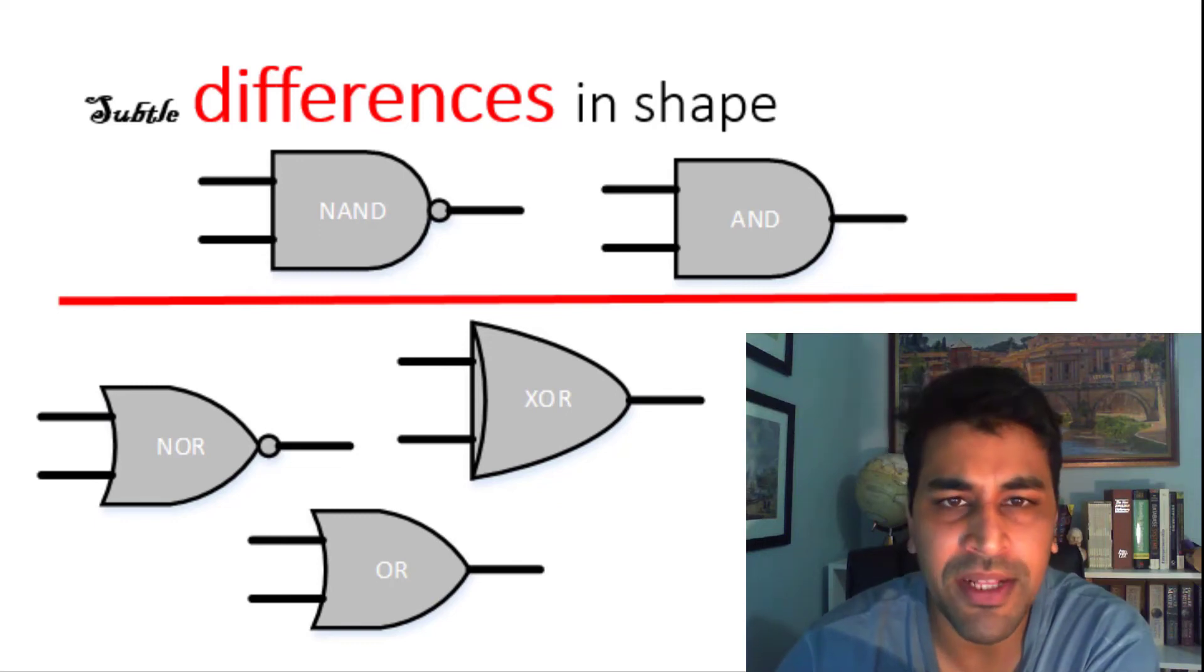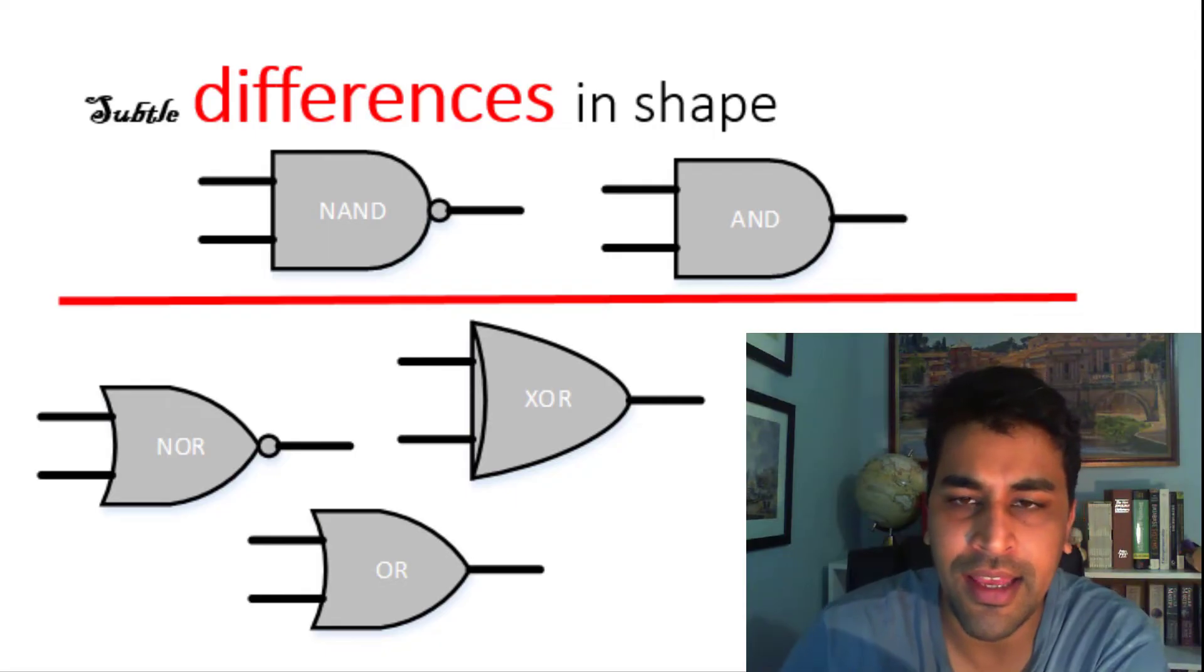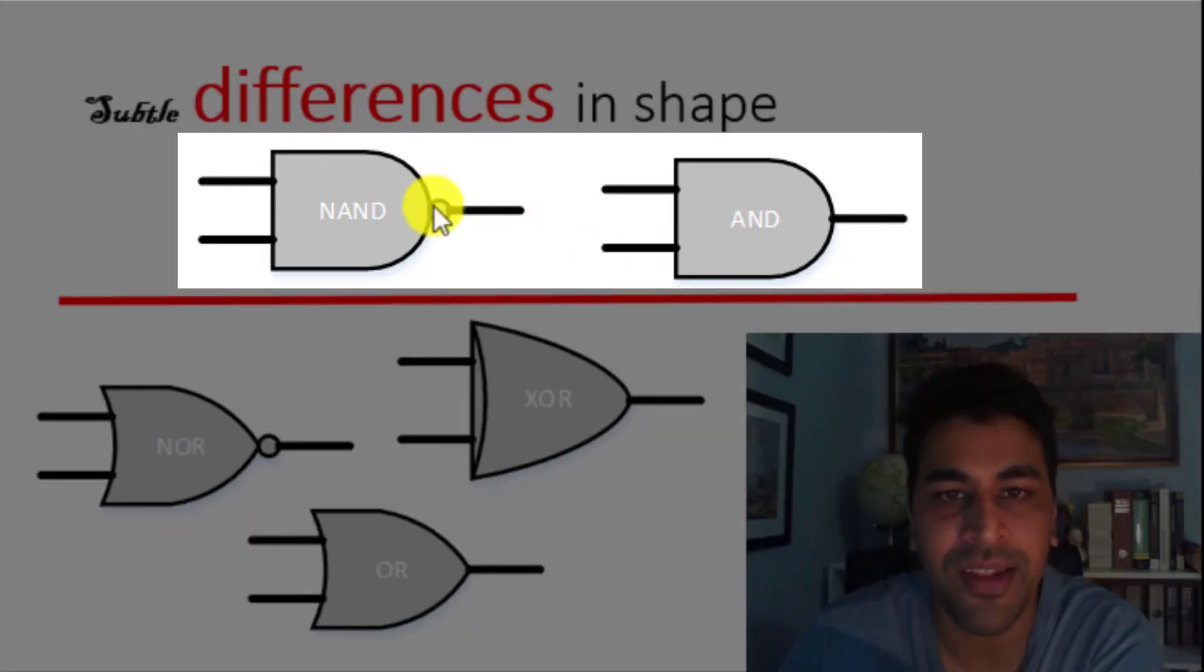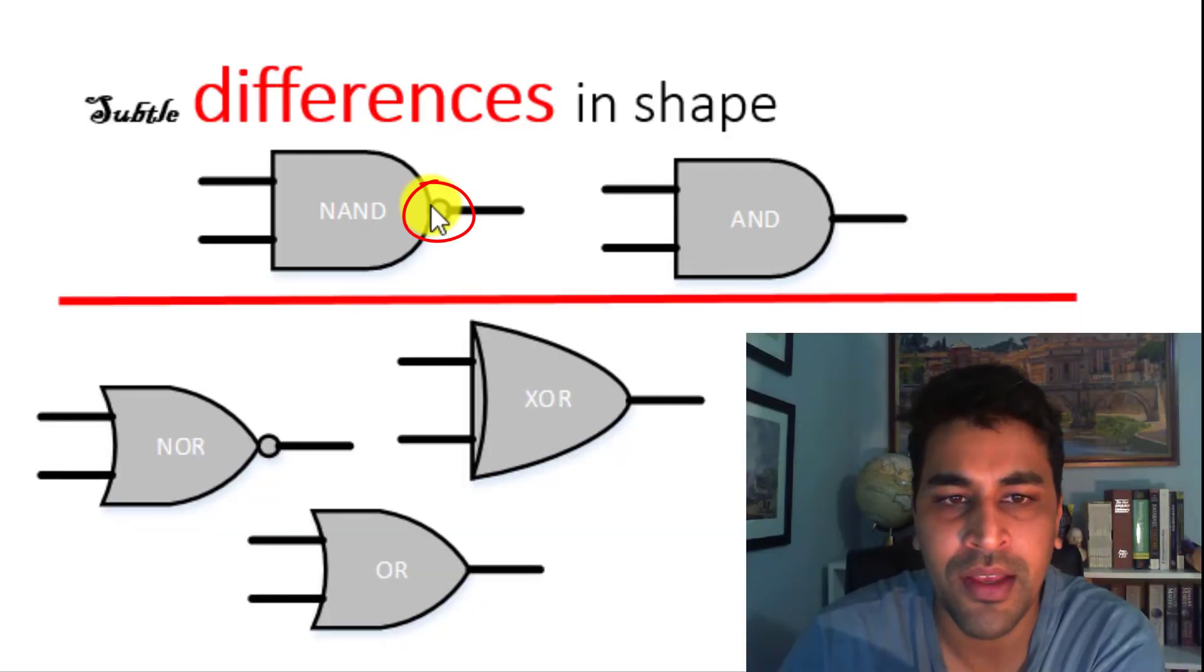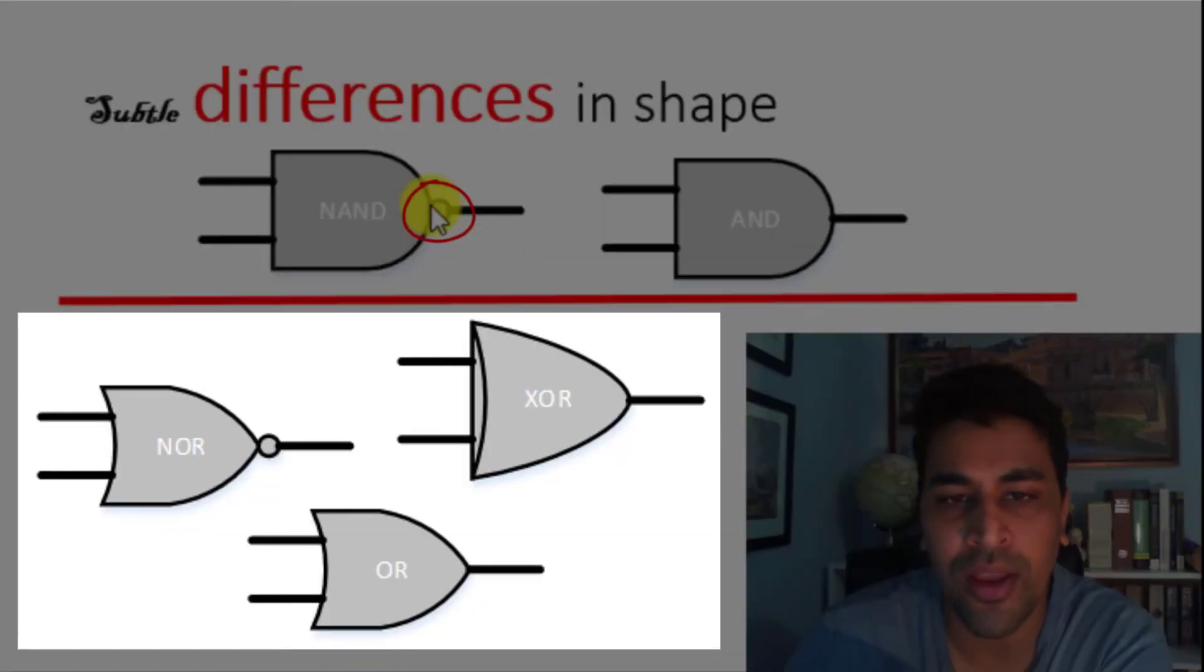There are somewhat subtle differences in shape between these six gates. The AND gate and the NAND gate are quite similar, however, the NAND gate has a little circle at the end of it. The XOR, NOR and OR gates are also very similar, but there are differences in the graphical representation. The OR gate is different to the NOR gate in that the NOR gate also has this little circle in the front, and the XOR gate is different to both of these NOR and OR gates in that it has an extra back.